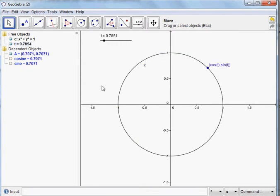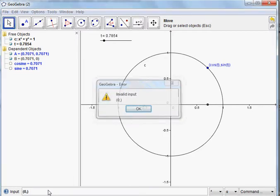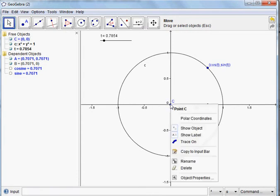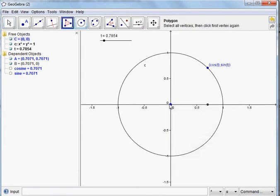We could also add the triangle. If I add the point cosine of t, comma, zero, I'll get the projection on the axis. Don't really need that label. Let's hide the label. And let's put the origin on. Let's hide that label. And now I can make a triangle.